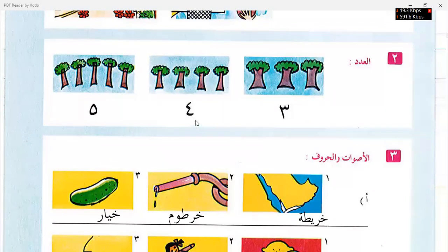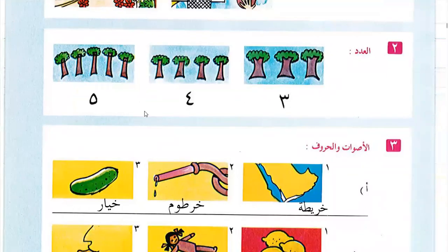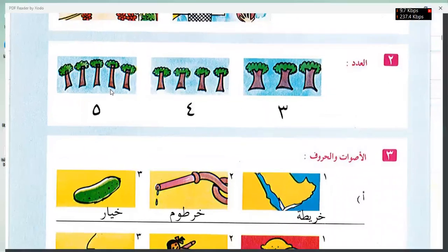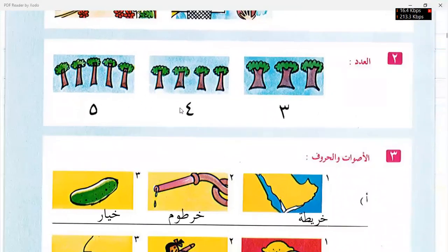4 in Arabic is Arba'a. 5 in Arabic is Khamsa. We will learn the counting in the grammar book insha'Allah — we will learn the rules regarding counting in grammar.